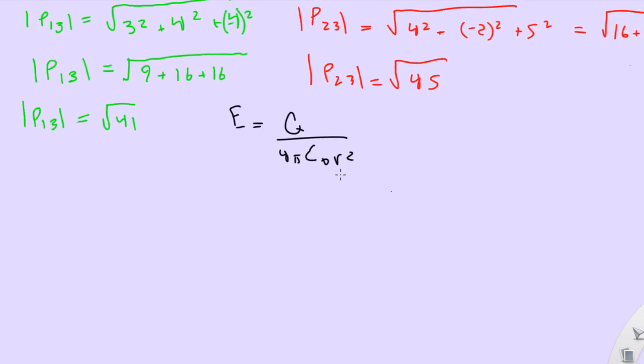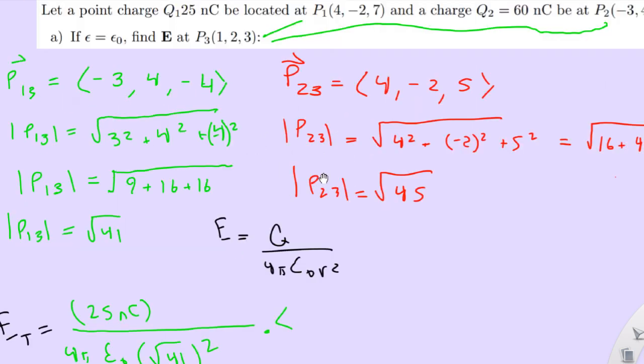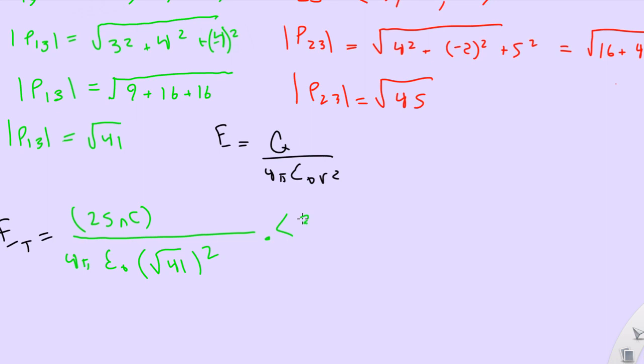So now we would just do two of these, because we have two different points. So e total, e total equals, q is 25 nanocoulombs, over 4 pi epsilon naught r squared, which would be 41. Actually, I'll write it squared, so you know what I'm doing. 41 squared times the vector. What's this vector? Negative 3, 4, negative 4 over the square root of 41. Easy enough. And remember, we're just multiplying by a unit vector here, just to get the correct direction.